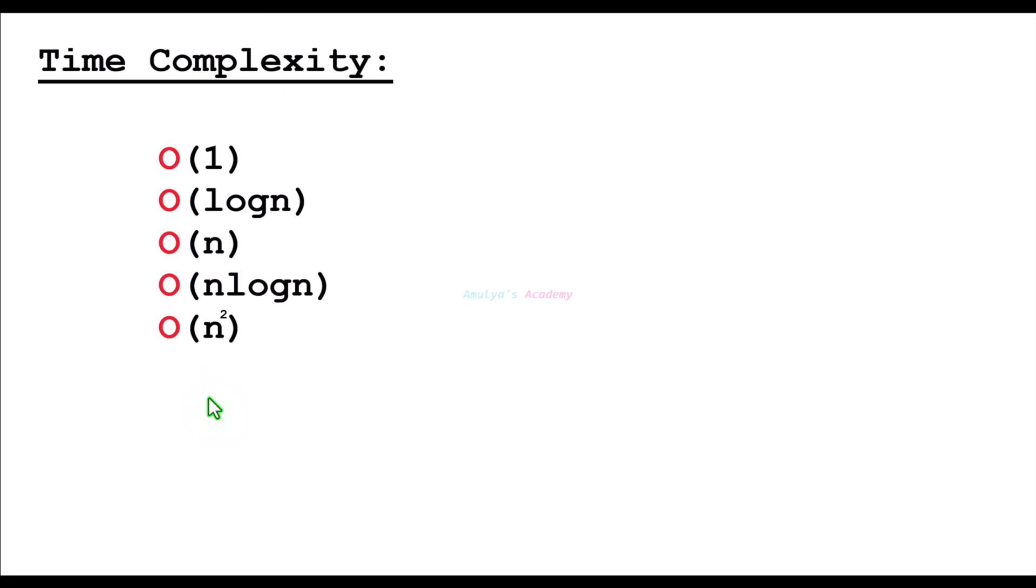Here we can see a few examples of time complexities: constant time, logarithmic time, linear time, log linear time, and quadratic time. Big O measures growth rate, not exact speed. Okay, so this is about time complexity.